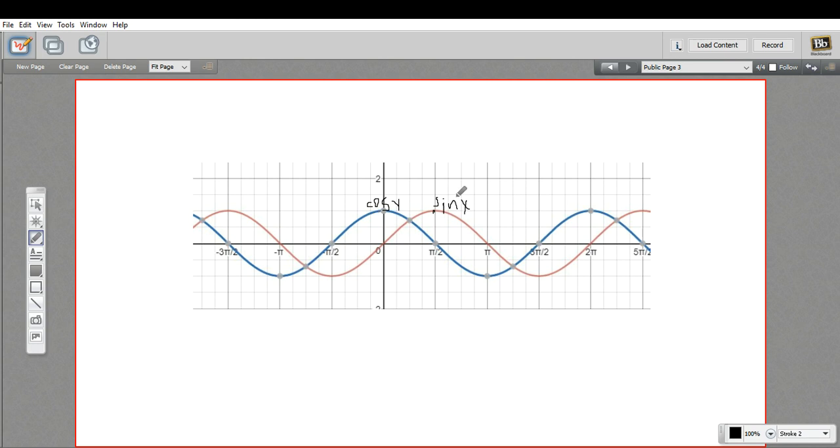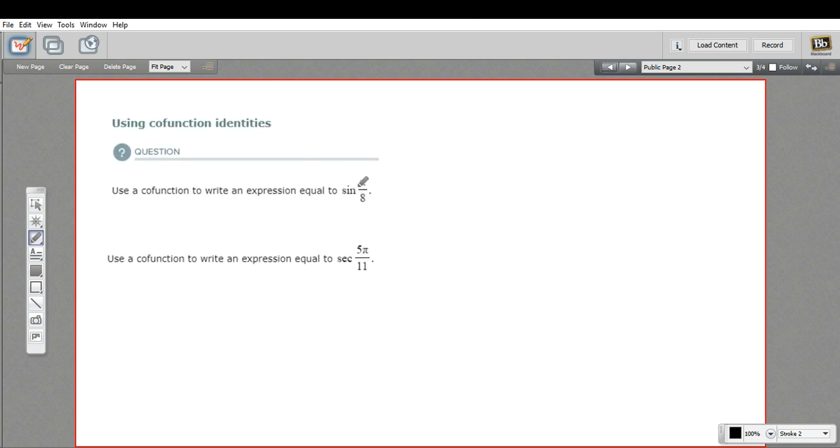So if we wanted to express sine of pi over 2, we could just subtract pi over 2 from it and say, oh, that's the same thing as the cosine of 0. And that's what you're doing when you're finding one value in terms of the co-function of another.